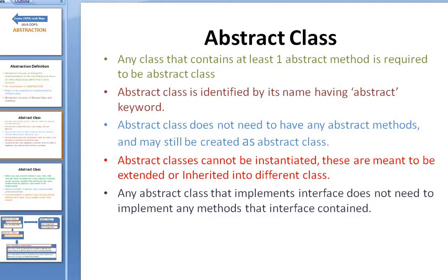An abstract class is defined by the keyword 'abstract'. If you have an abstract method you would write 'abstract void' then the method name. Similarly, if you have an abstract class you would write 'abstract class' then the class name. Abstract classes cannot be instantiated — they are meant to be extended or inherited into different classes.